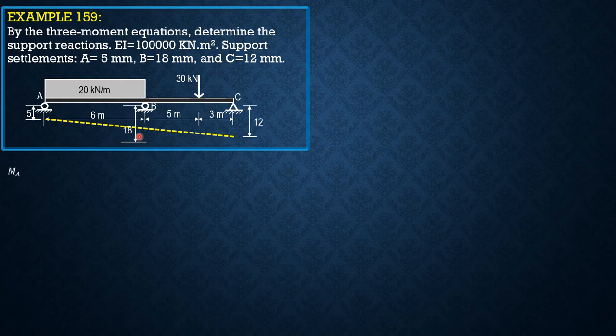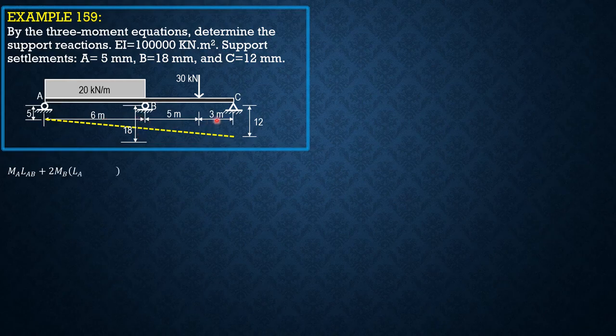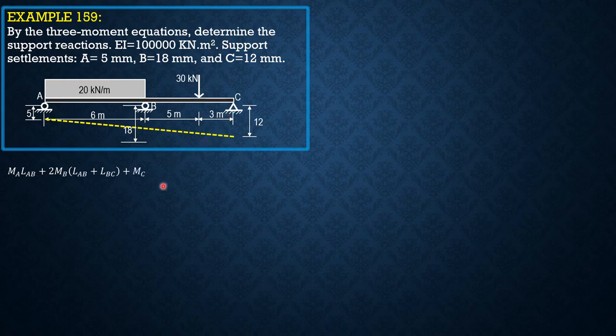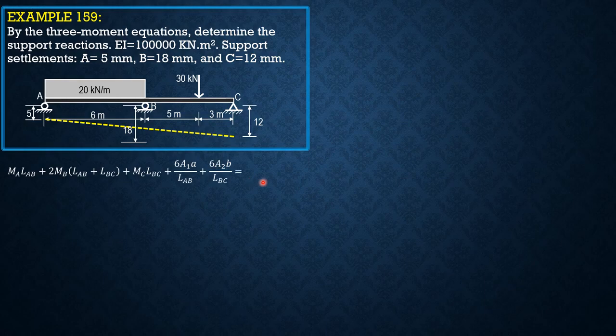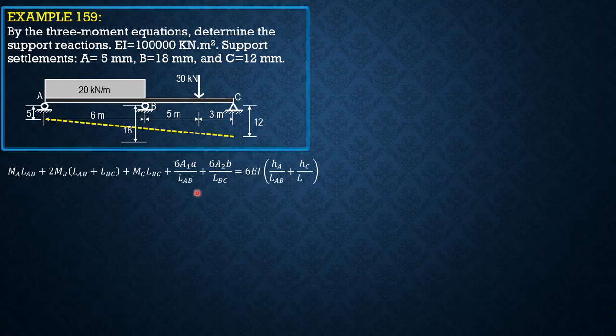So the three moment equation is: MA·LAB + 2MB(LAB + LBC) + MC·LBC + 6A₁A/L₁ + 6·area₂B/L₂ = 6EI(HA/L₁·LAB + HC/LBC).